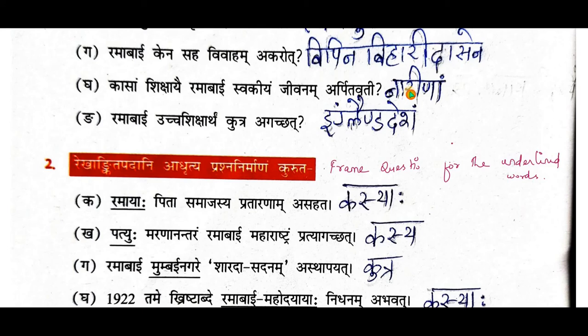Second question: rekankita padani adhrithya prashnanirmanam kuruta — frame questions for the underlined words. First sentence: ramayaha pita samajasya prataranam asahata. The underlined word is ramayaha, so since it is a stri linga shabdaha, the question word kasiyaha should be used. Second sentence: patihu marananantaram ramabhai maharashtram pratyagachet — the underlined word is patihu.